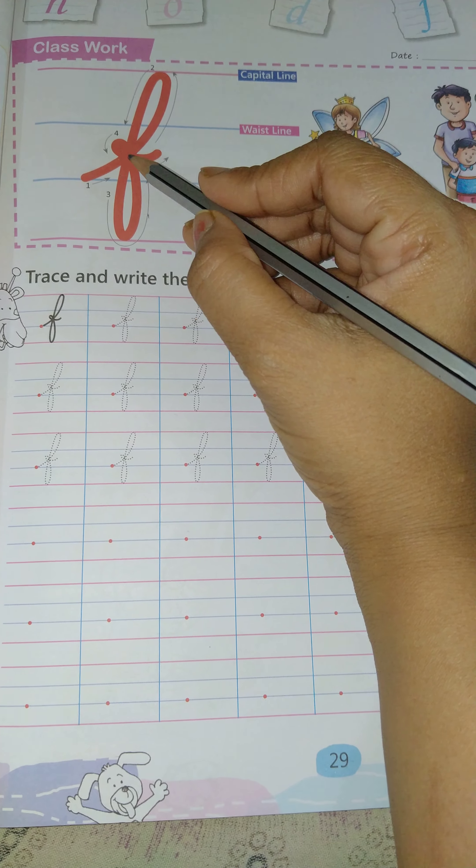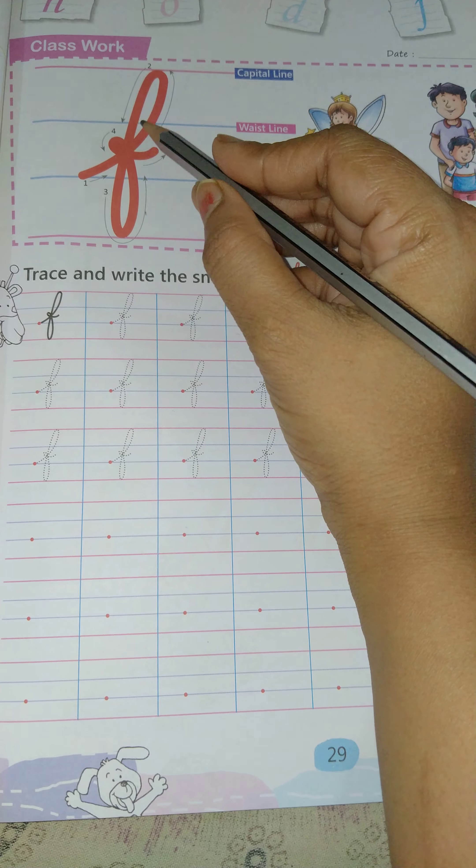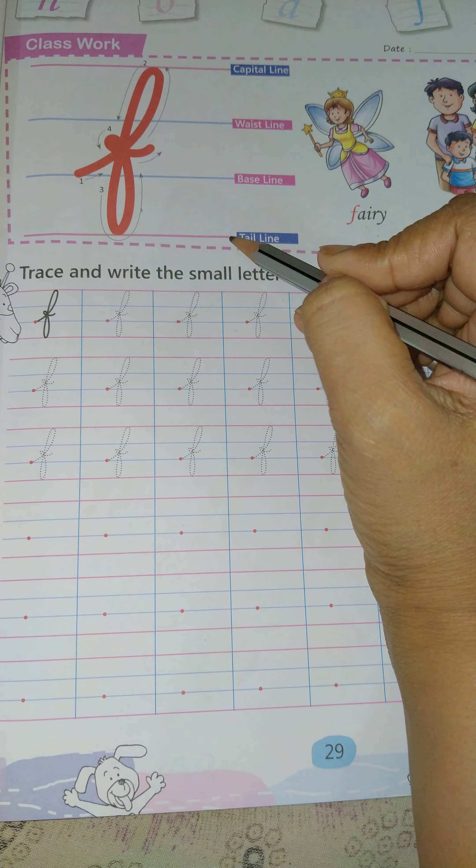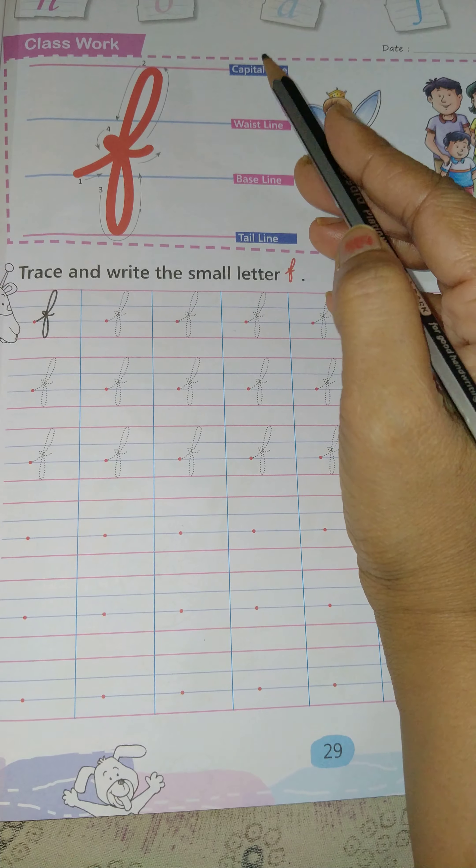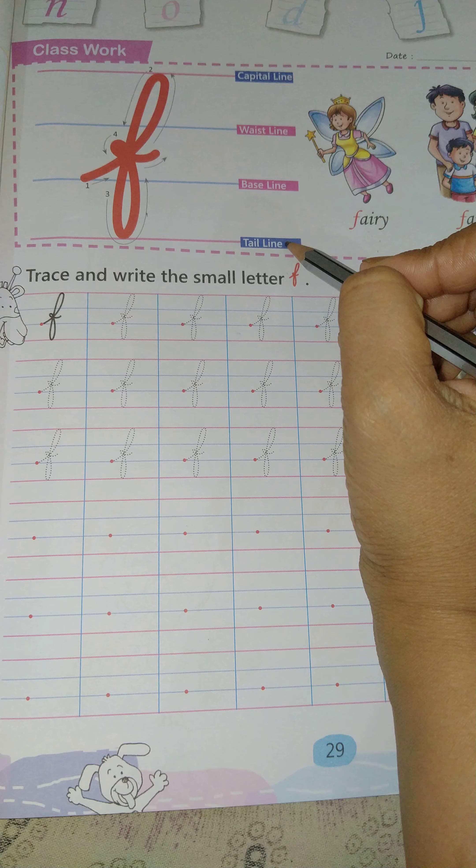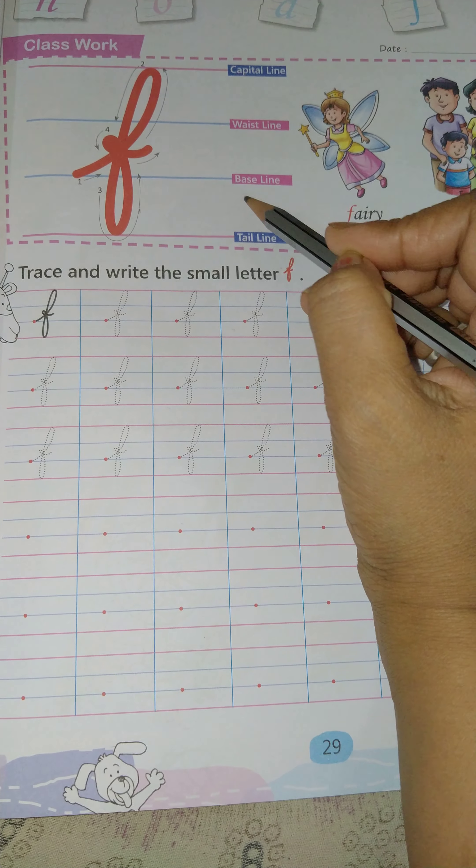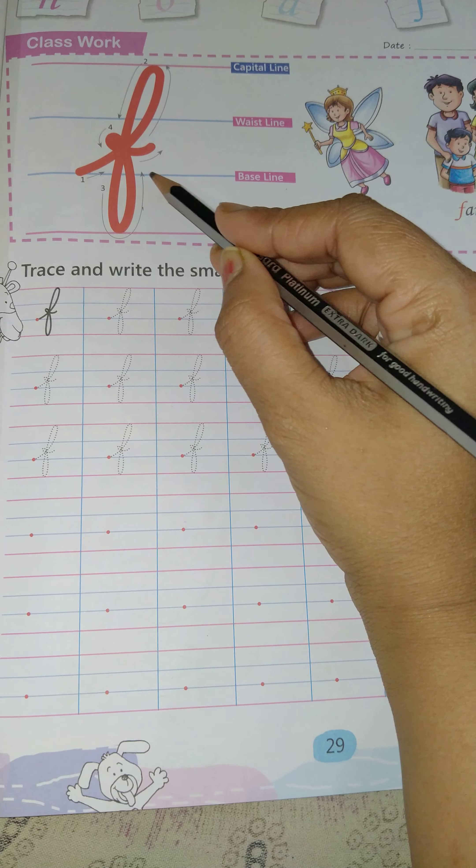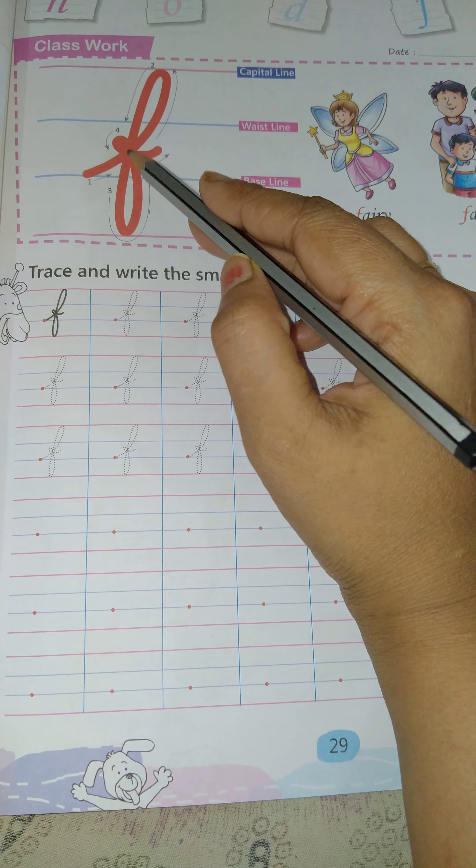How we will write cursive F? You have four lines: capital line, waistline, waistline, and tail line. We will start from baseline, the third line. One, two, three, four.